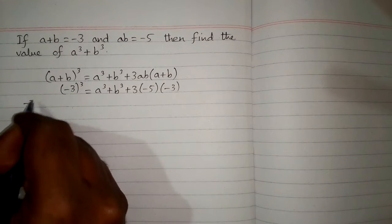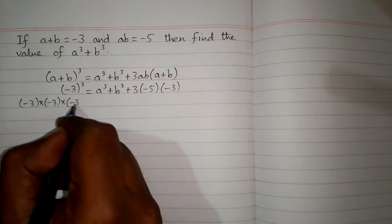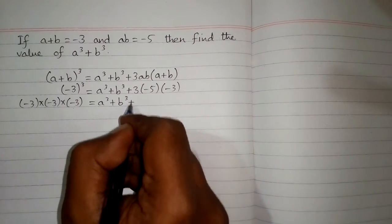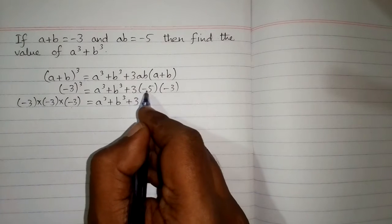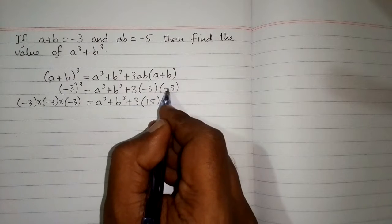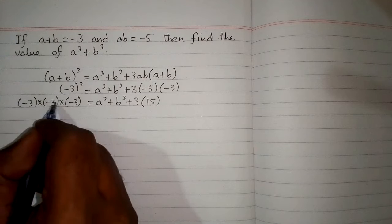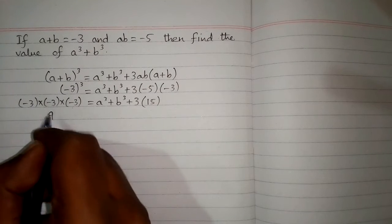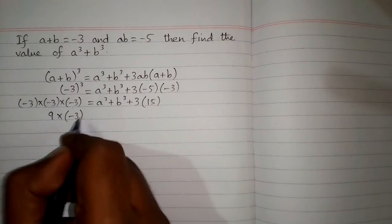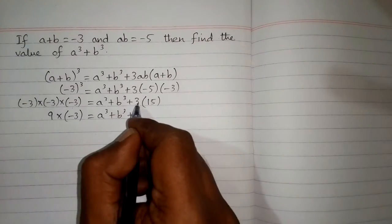Minus 3 to the power 3 means minus 3 multiplied by minus 3 multiplied by minus 3, is equal to a cube plus b cube plus 3 times. Now minus 5 multiplied by minus 3 is 15, because minus times minus becomes plus, and 5 multiplied by 3 is 15. Minus 3 multiplied by minus 3 is 9.